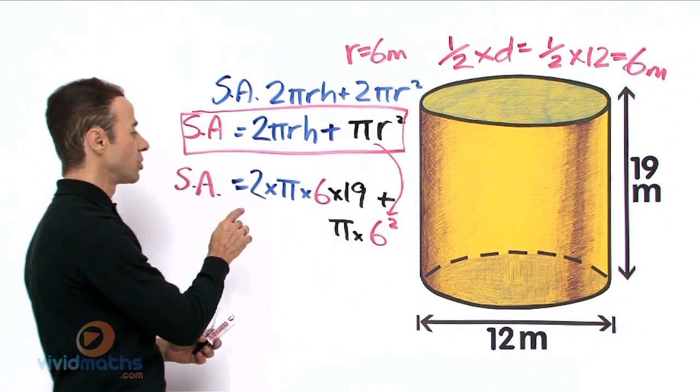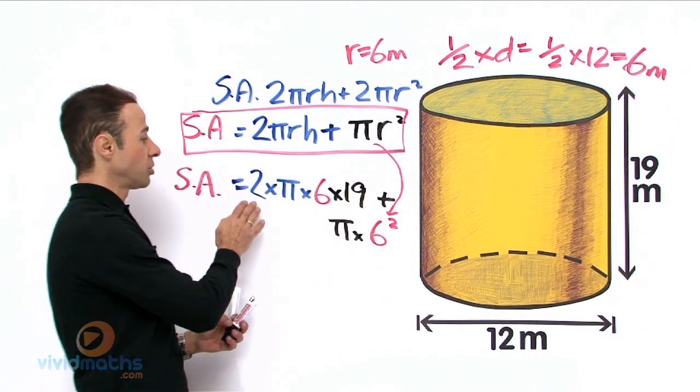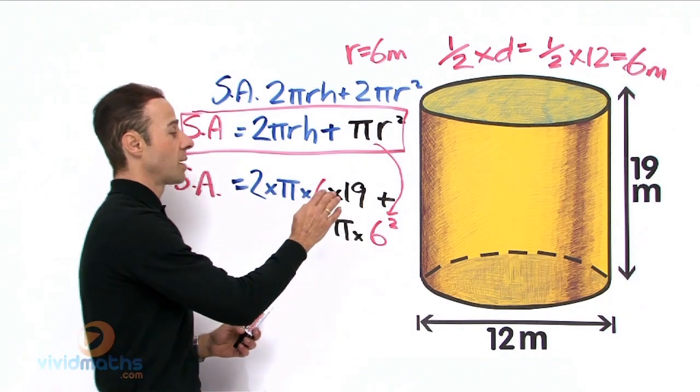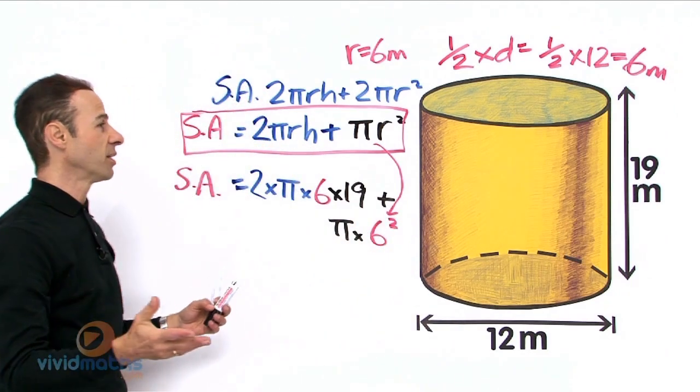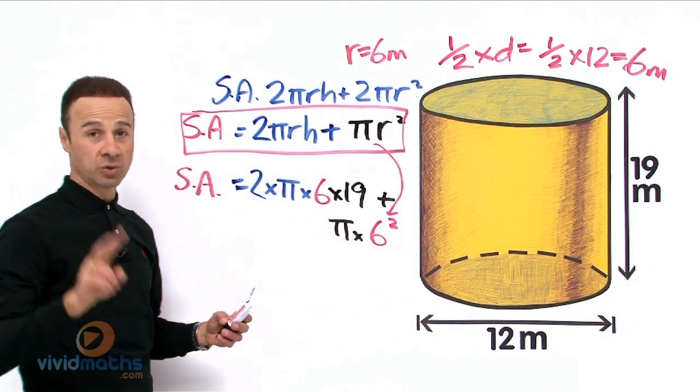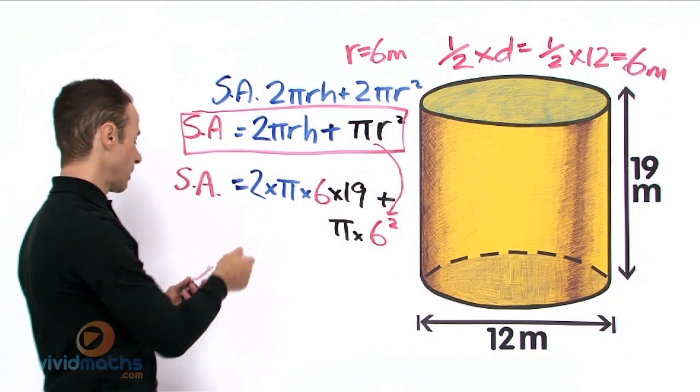So let's work out the front part on the calculator. We are going to go 2 times π times 6 times 19. That's the curved part around here, that's the 2πrh. So let's put that in there. That's going to yield us, to two decimal places, that front part.